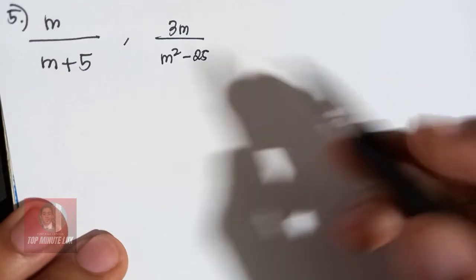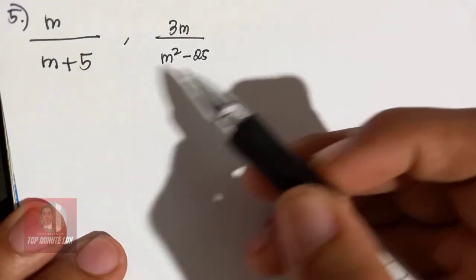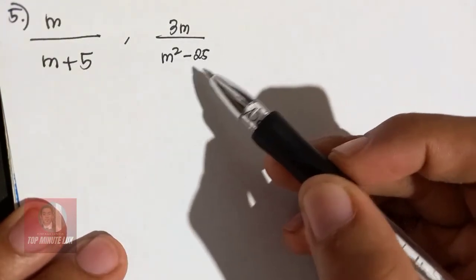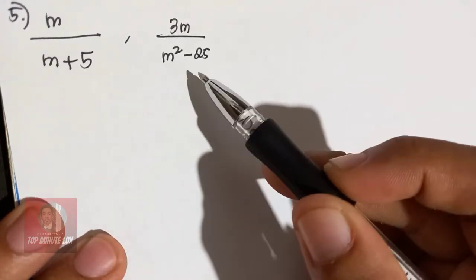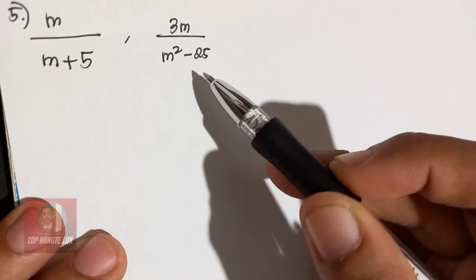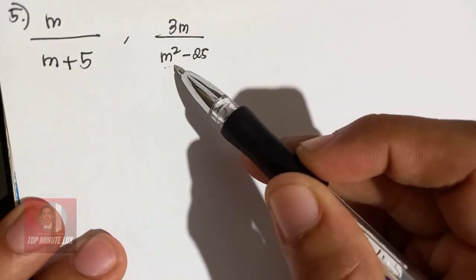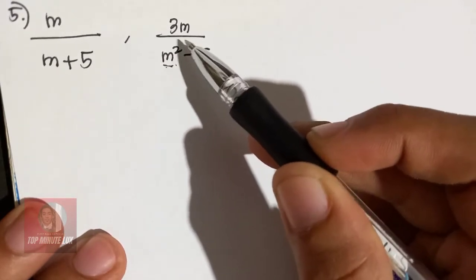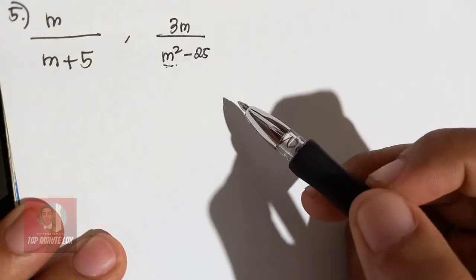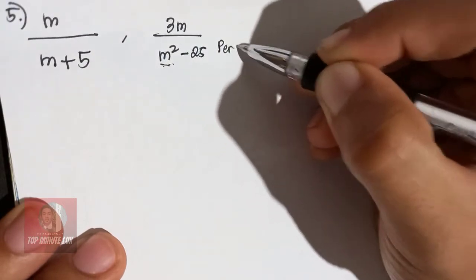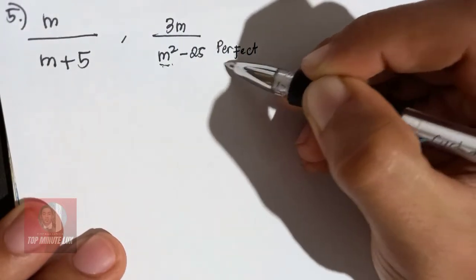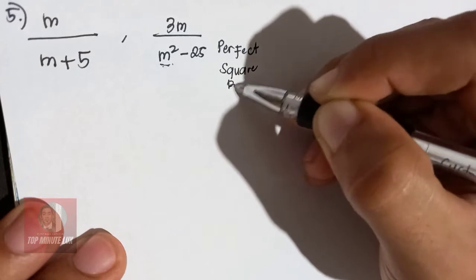Number 5 example. M over M plus 5 together with 3M over M squared minus 25. In this case, you cannot immediately combine these two denominators because there is M squared. There is an exponent of 2. And M squared minus 25 is obviously, from our past lesson, this is an example of perfect square binomial.